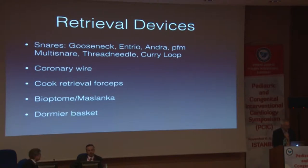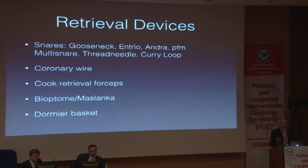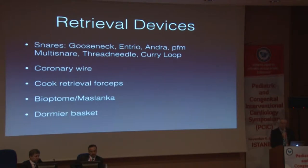The Cochrane 3D forceps is very strong. There are bioptome-type devices, but the bioptome doesn't have a big bite and it's not very strong, so you can catch something and then not be able to keep it — unlike the Cochrane retrieval forceps, which once you grab it, it won't let go. There is a biopsy-type device, the Maslanka device, marketed by PFM, which is really very industrial-heavy biopsy forceps. And of course, the Dormier basket.